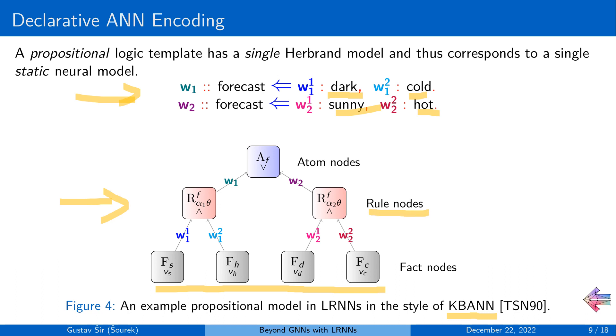And then there are rule nodes, capturing respective conjunctions between these, commonly under some smooth fuzzy logic interpretation to be differentiable. And then these form input into so-called atom nodes, again corresponding to logical atoms from the template, such as the forecast proposition here. Now, these are associated with logical disjunction for combining the different rules together.